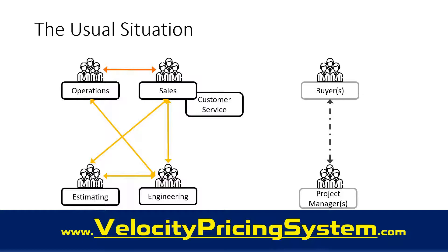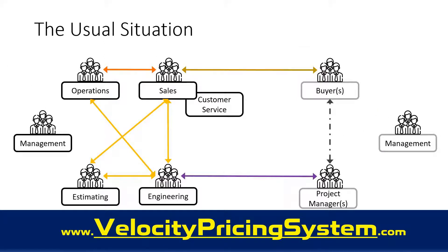This is classic: sales and operations don't talk — we know that fight between those two departments. So what happens when we go to communicate with the customer? Sales is saying one thing to the buyer while engineering is saying something completely different to the customer's project managers — different deadlines, different requirements. Then management gets involved and you can just throw a bomb on the whole thing. Customers are left exasperated: they can't get clarity, they can't get a price, they don't know what's happening.